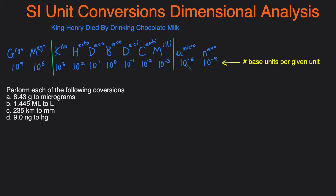You also need to add a couple more to cover the full range. Micro is 10 to the negative 6, nano is 10 to the negative 9, mega is 10 to the 6, and giga is 10 to the 9. Notice that once you're outside the mnemonic range, you add three every single time.